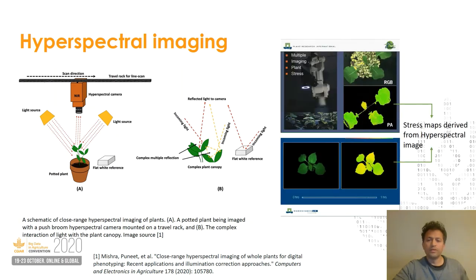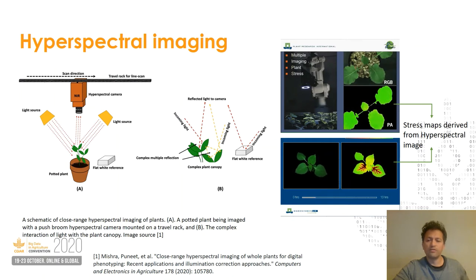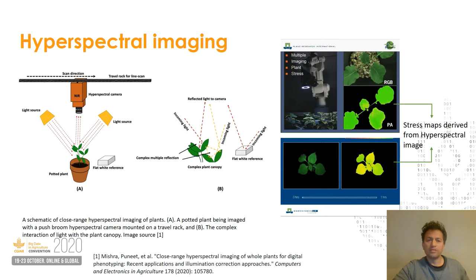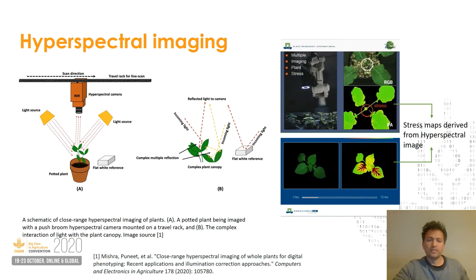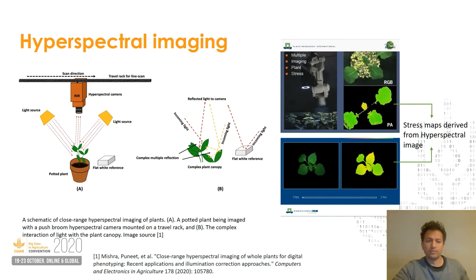However, when these challenges are addressed properly, we can extract even more complex traits. For example, as you can see in this image, stress in plants could be detected much earlier with hyperspectral imaging than with the naked eye. This is what we want to leverage in the current project as well.